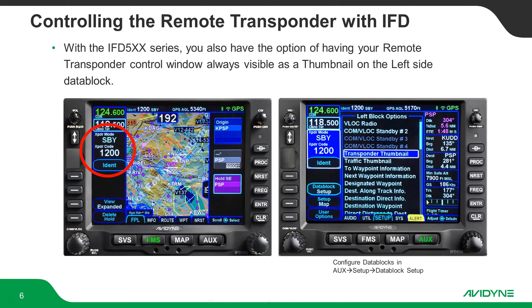One more option: on the 5 series boxes, there's the option to put up a thumbnail either for traffic or for transponder where the NAV frequencies used to be. You can also configure this for multiple COM standbys, and when you push the button it'll toggle between COM, then NAV, and then your transponder shows up here. This is the left data block configuration.